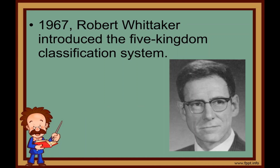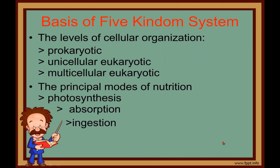This system plays an important role in the phylogenetic relationship between organisms. The basis of the Five Kingdom System is complexity of the cell — whether it is prokaryotic or eukaryotic, that is the level of cellular organization.